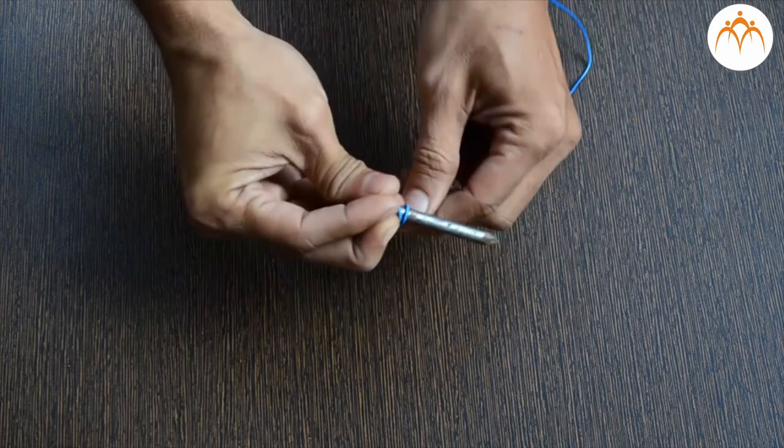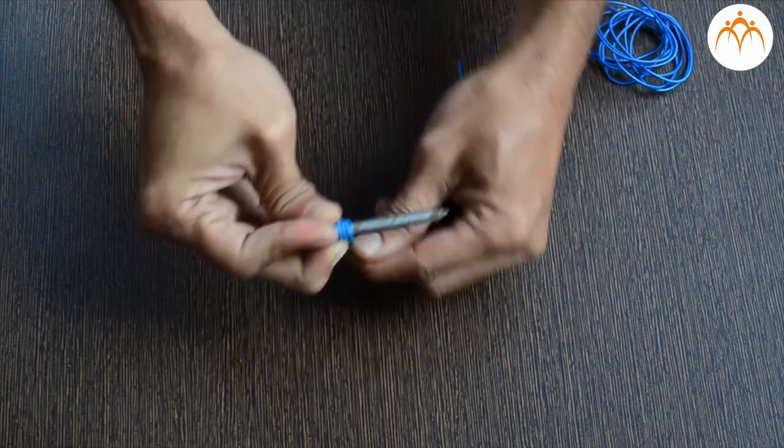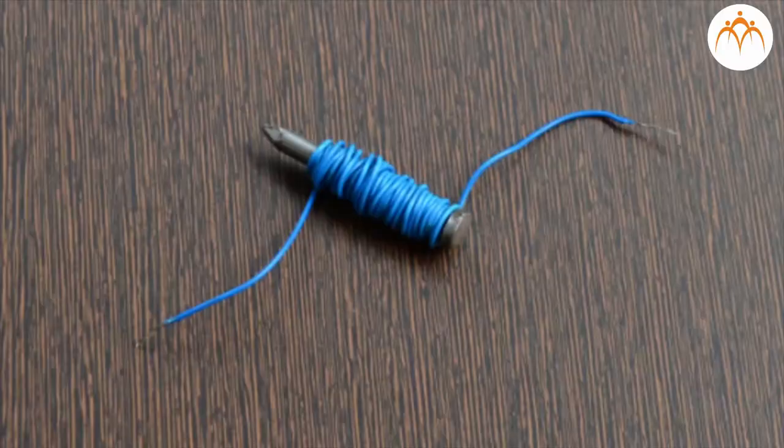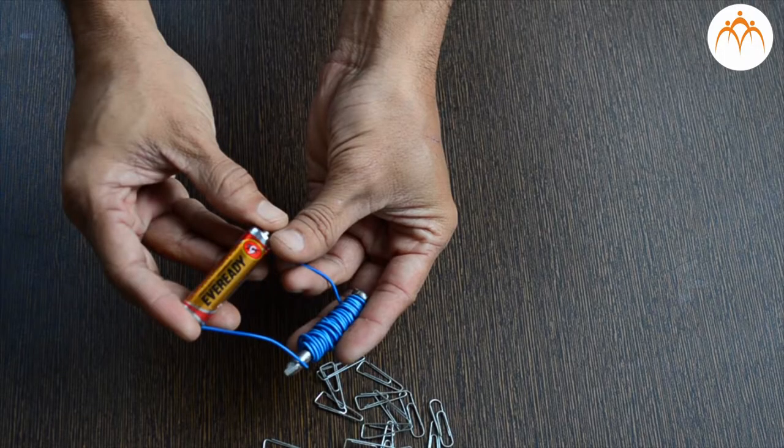If about 100 turns of a plastic insulated wire are wound around a nail, remove the plastic coating from the bare ends. Hold the bare ends of the wire against the terminals of a 1.5 volt battery. What will happen?